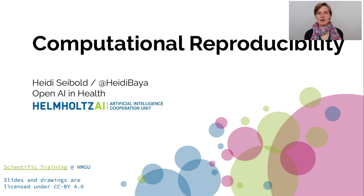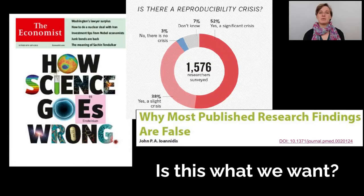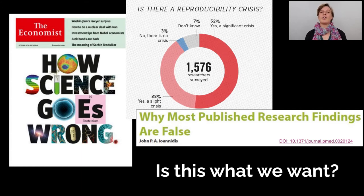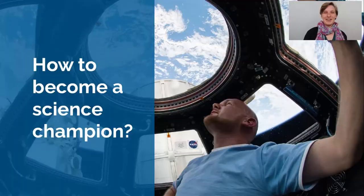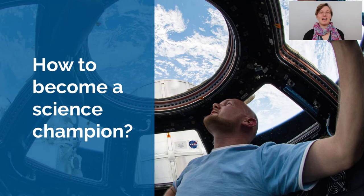Now what is this whole thing about reproducibility all about? Let's start with the problems we're facing. The problem is what we call the reproducibility crisis — researchers say they're not able to reproduce a lot of the scientific research that others have done, and that of course is a problem and we want to do better.